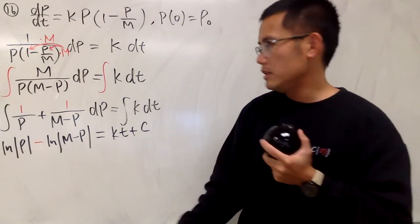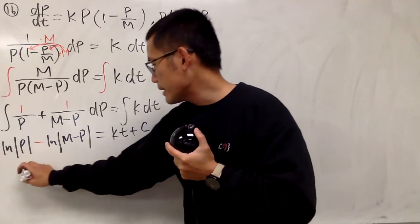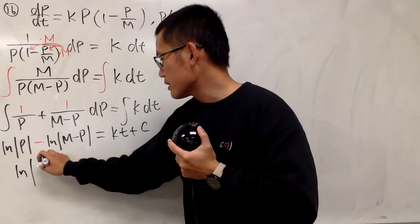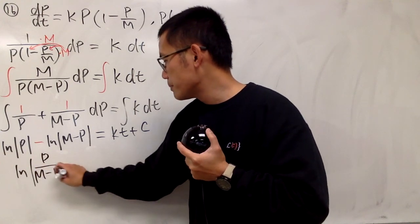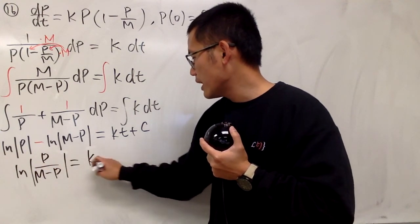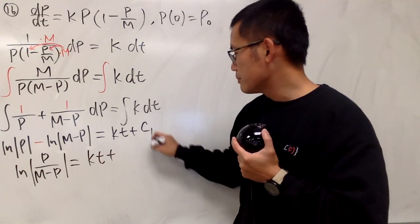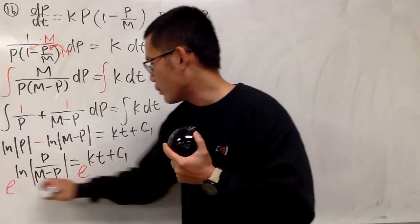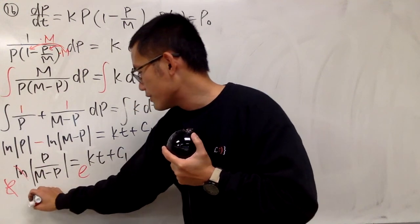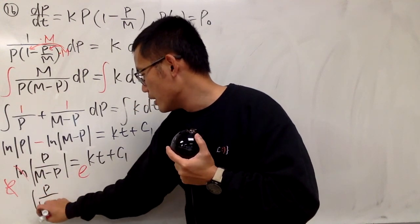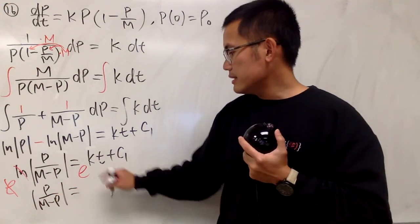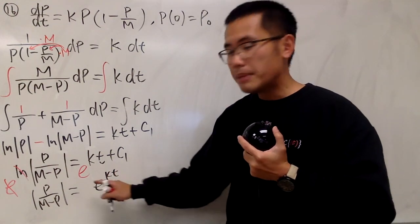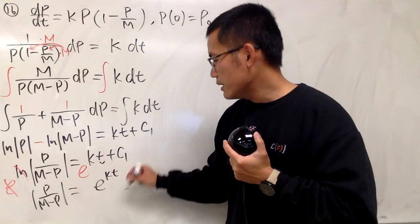Now I want to isolate the p. To do so, combine the natural log. ln(p/(m-p)) equals kt plus c₁. Let's put c₁. Then I will just do e to this power, e to that power. They cancel.